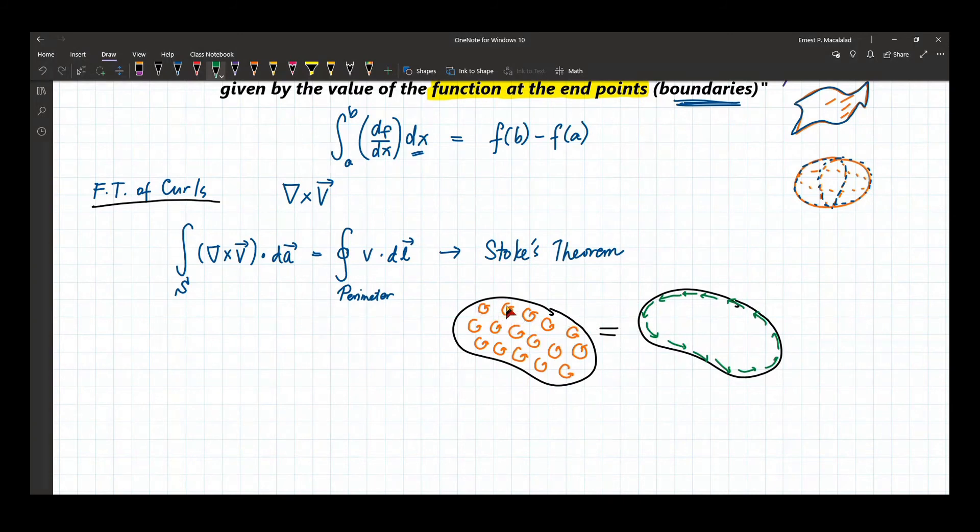Because remember that these are vectors. So for example, a vector here will be pointing in this direction. But adjacent to this on the other side, another vector will point in the opposite direction because of the direction of the rotation. So effectively, these two vectors will just cancel each other. So the only components of this curling vector field will be on the surface, and that's the net effect of the surface.